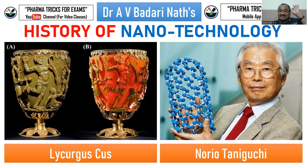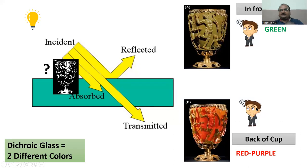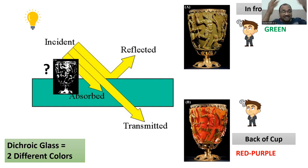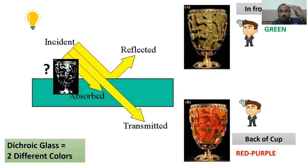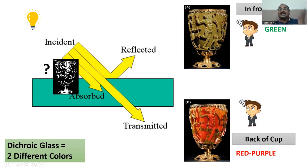Just listen very carefully. First of all, this Lycurgus Cup — very interesting. Nobody knows what is its original color. It was still there in the British Museum. We don't know the color because it shows different colors depending on where you stand. At the back side of the cup you can see the red, the purple color. And if you stand in front of the cup, you will see the green color. That's why this is called a double color.